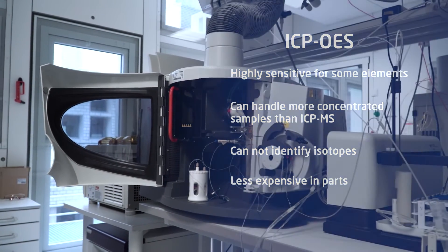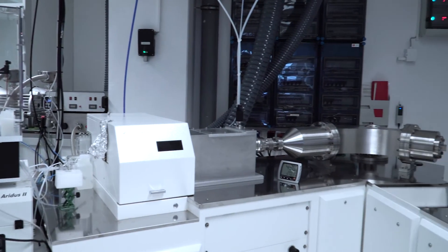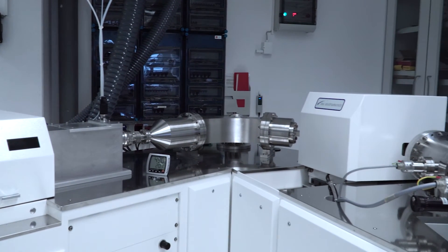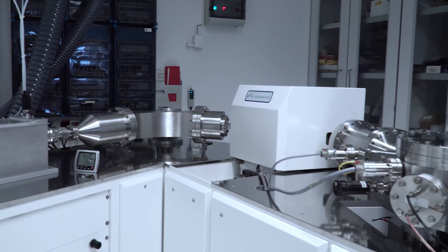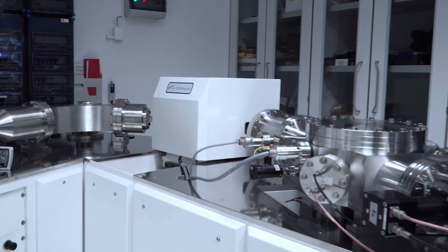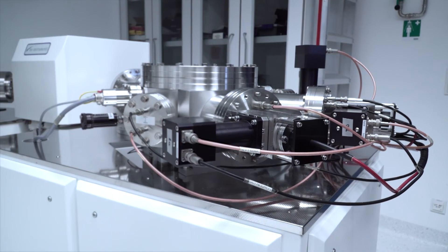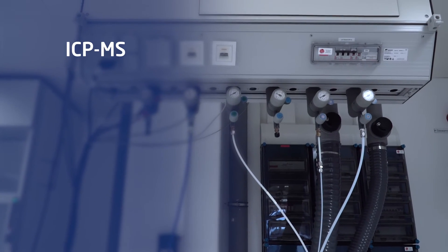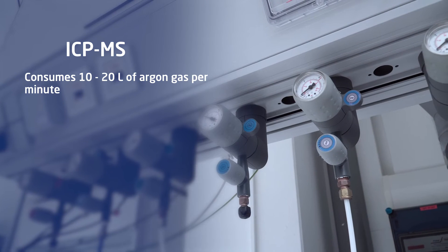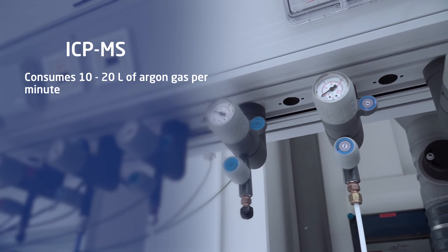The ICP-MS technique can measure extremely small concentrations for some analytes, parts per trillion or even parts per quadrillion. But it is also quite demanding regarding lab requirements. A typical ICP-MS consumes 10 to 20 liters of argon gas per minute.